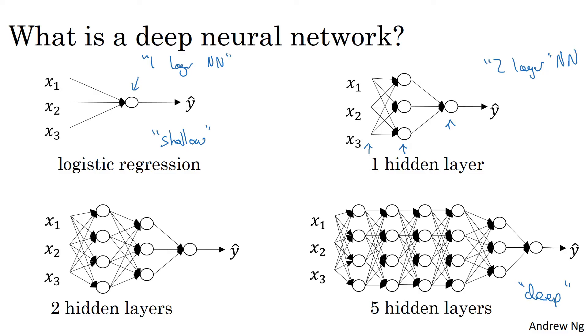But over the last several years, the AI and machine learning community has realized that there are functions that very deep neural networks can learn that shallower models are often unable to. Although for any given problem, it might be hard to predict in advance exactly how deep a neural network you would want. So it would be reasonable to try logistic regression, try one and then two hidden layers, and view the number of hidden layers as another hyperparameter that you could try a variety of values of and evaluate on holdout cross-validation data or on your development set.